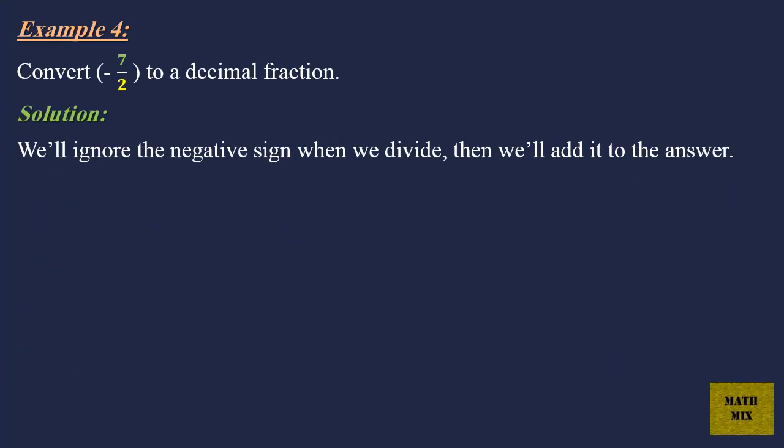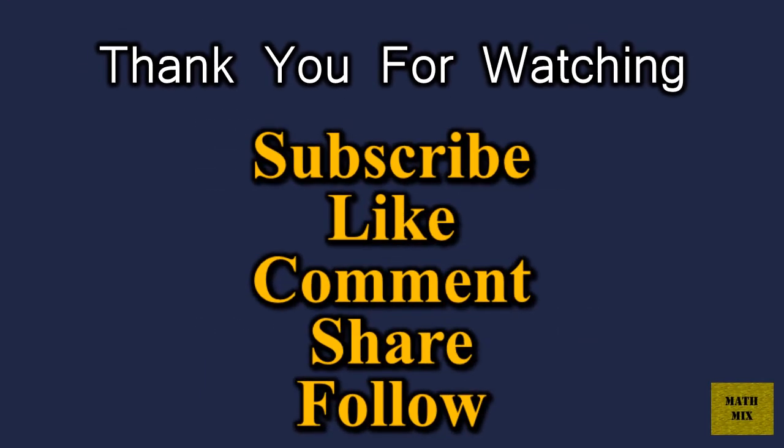Example 4: Convert minus 7 over 2 to a decimal fraction. Solution: We'll ignore the negative sign when we divide. Then we'll add it to the answer. So 7 over 2 equals 3.5. Therefore, minus 7 over 2 equals minus 3.5.